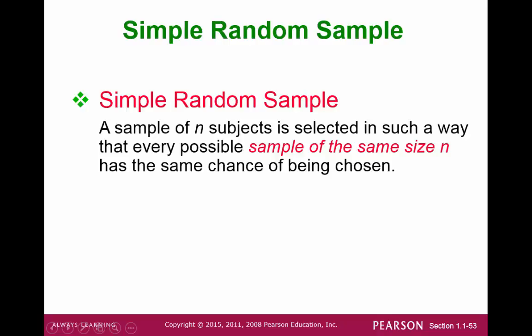Let's take a look at some methods of sampling now. Again, our goal is a simple and random sample. A simple random sample means that if you have N subjects selected in such a way that every possible sample of size N has the same chance of being chosen, then we have a simple random sample.